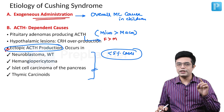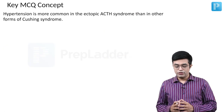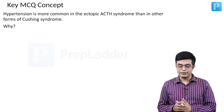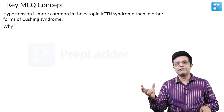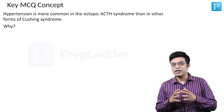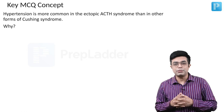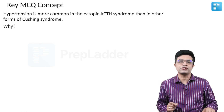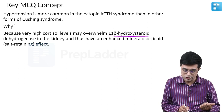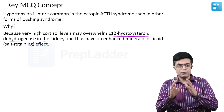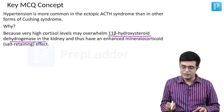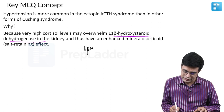An important MCQ concept: hypertension is more common in ectopic ACTH syndrome than in other forms of Cushing syndrome. Among three children — one on exogenous corticosteroids, one with pituitary adenoma, one with neuroblastoma producing ACTH — the third child has more chances of hypertension. This is because very high cortisol levels are produced, and there is an enzyme called 11-beta hydroxysteroid dehydrogenase (11-beta HSD).